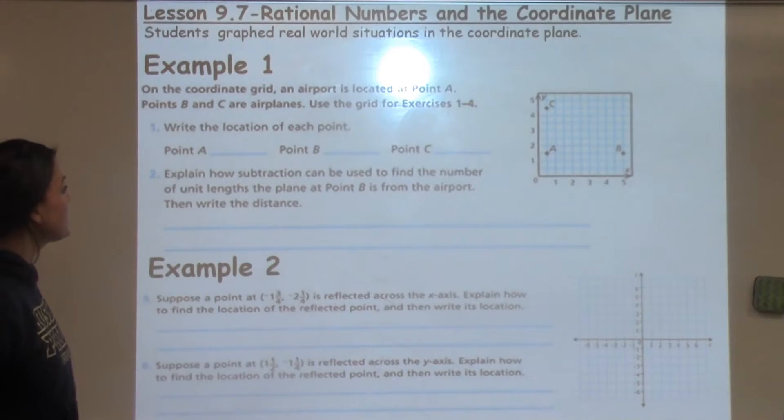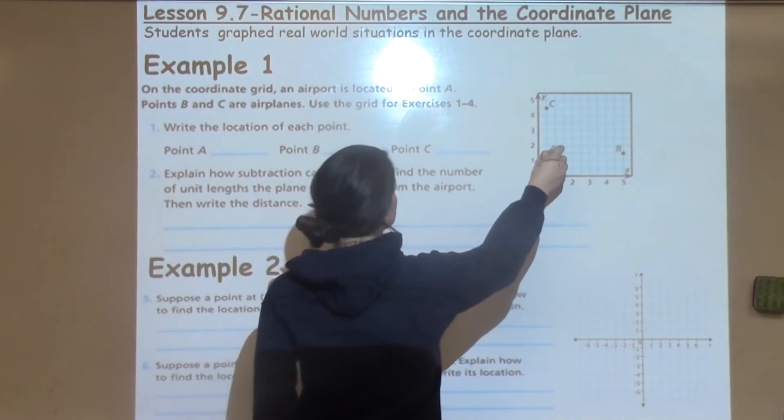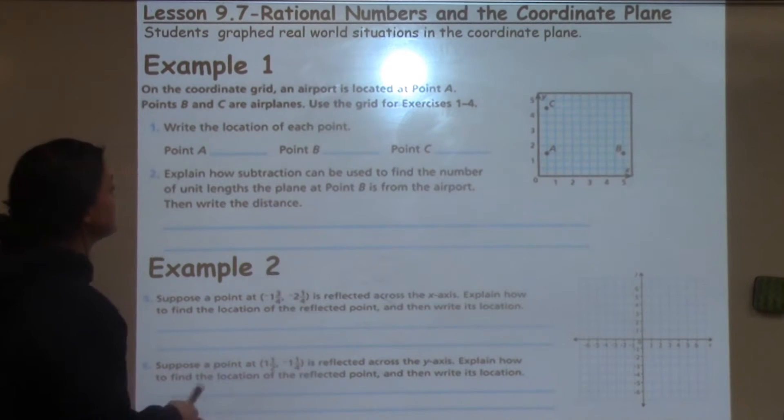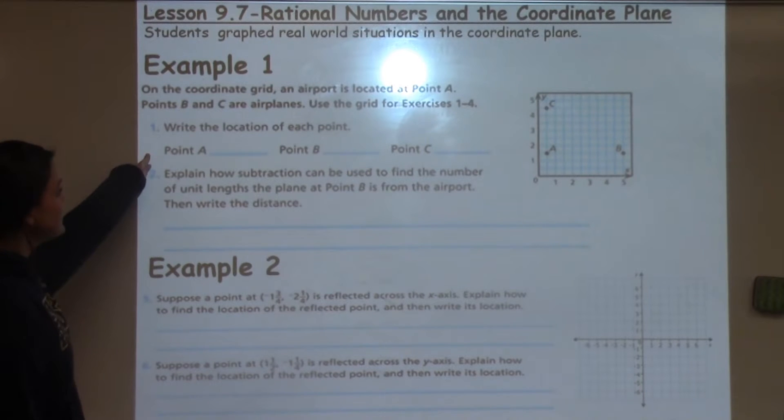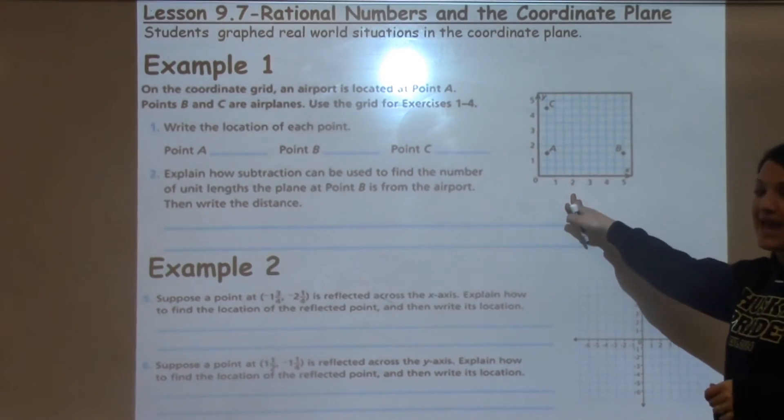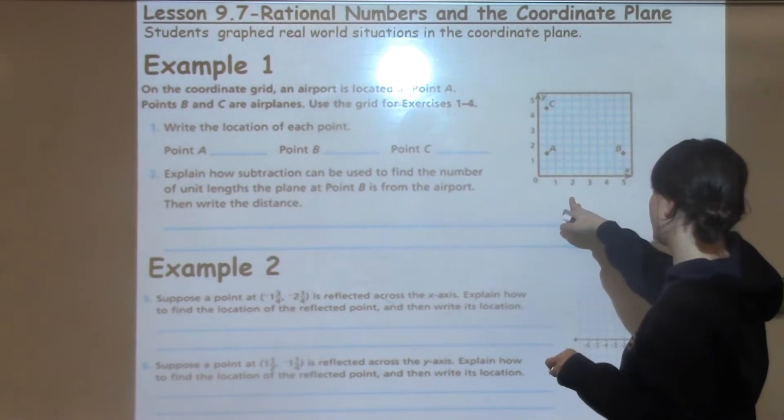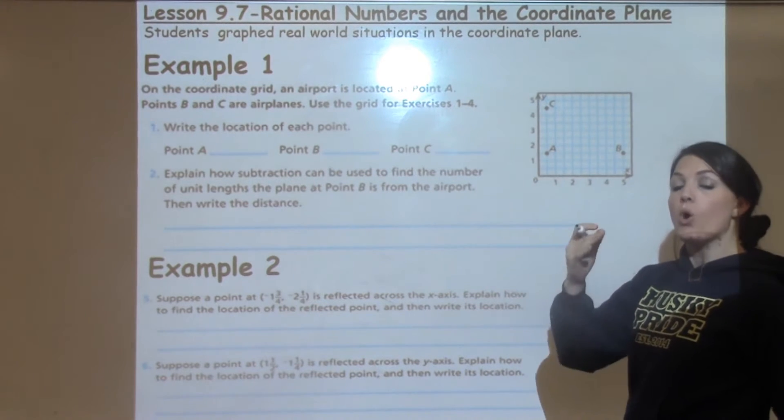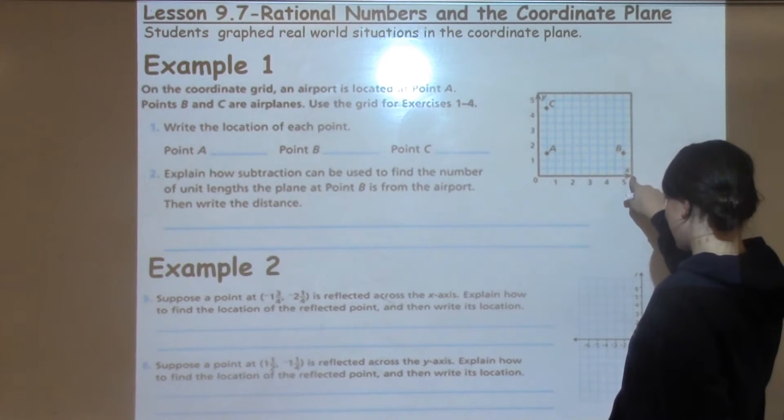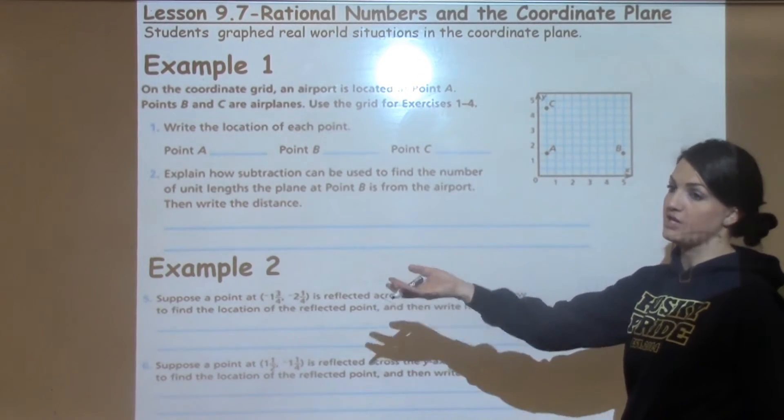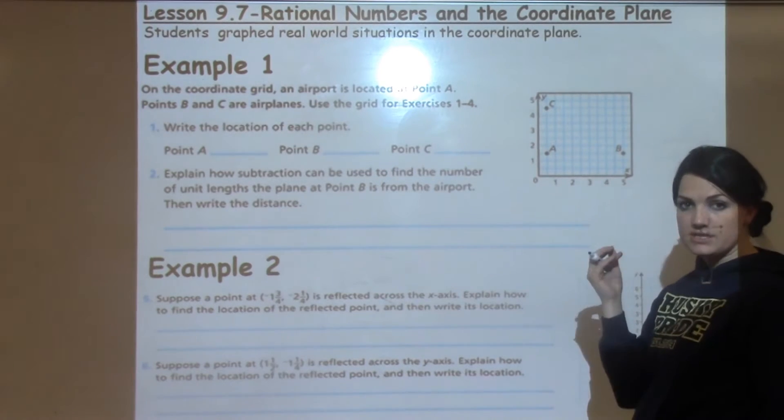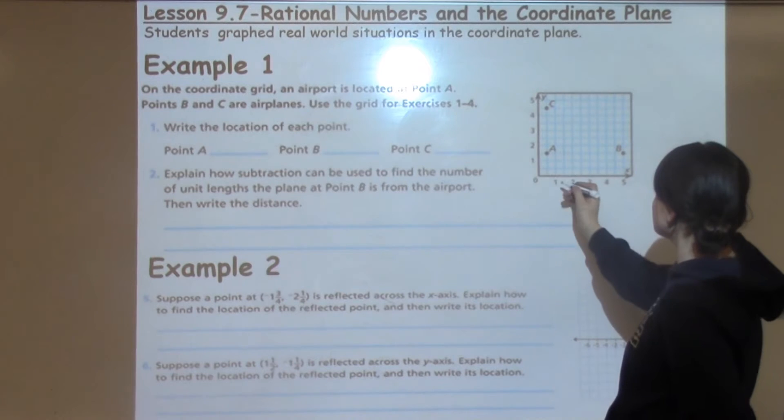Example 1 says, on the coordinate grid, an airport is located at point A, and then points B and C are airplanes. We're going to use those to help us answer the first couple questions. Number 1 says, write the location of each point A, B, and C. The first thing you need to do is find point A and think about where it falls on the coordinate grid. Anytime I am plotting a point or trying to find the ordered pairs that a point is made up of, I have to move on the x-axis first. We use reminders like you run before you jump, you have to go in somewhere before you go up the escalator, to help them remember to go over first before you go up.